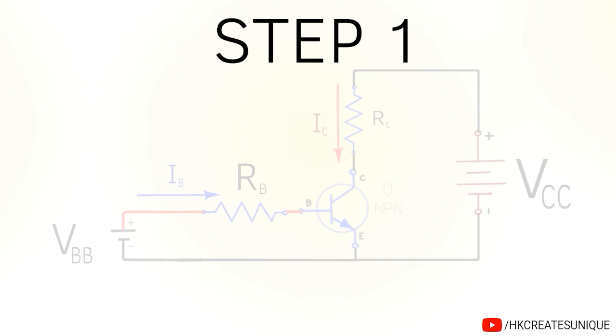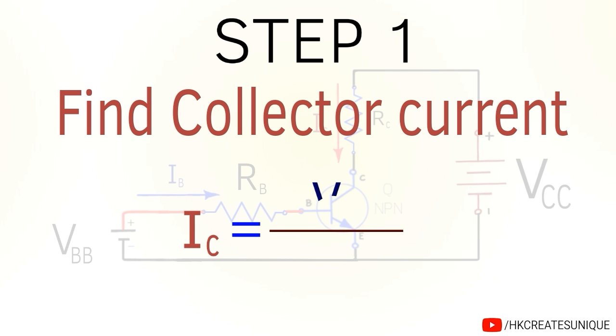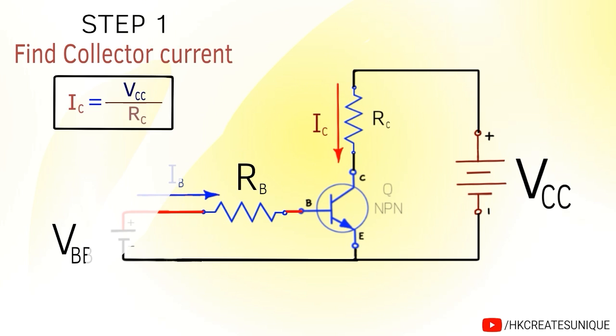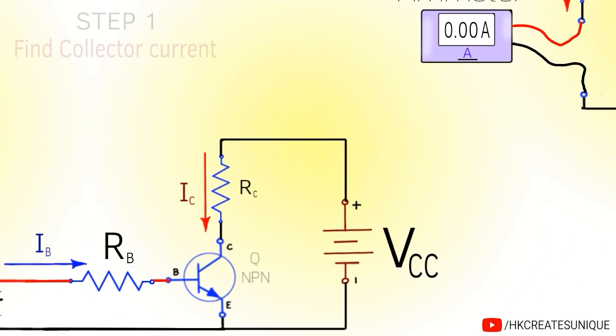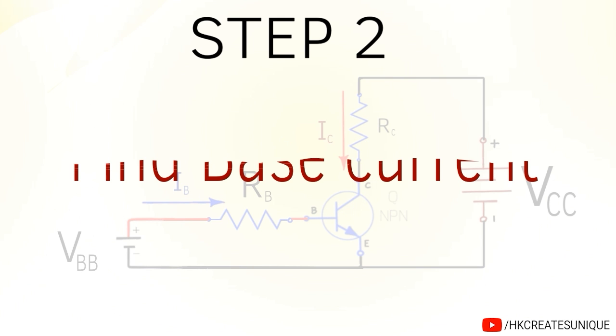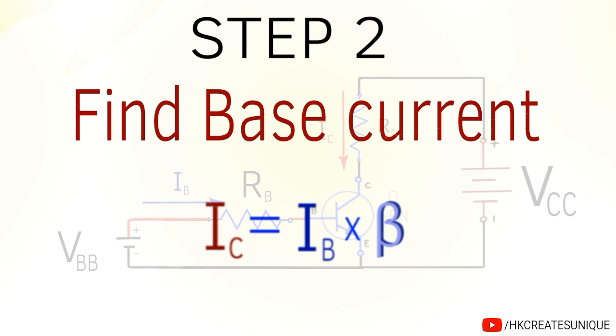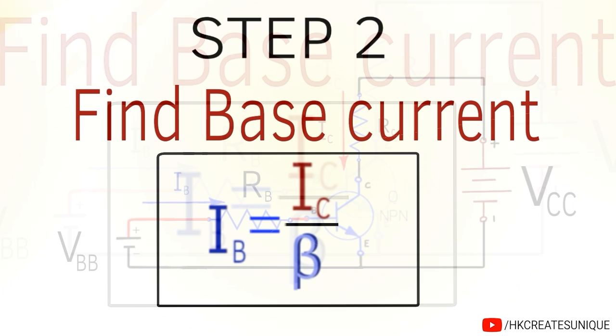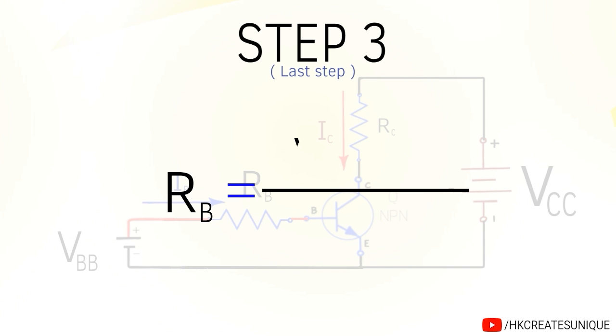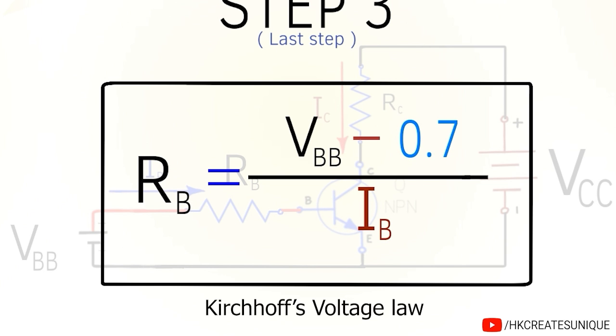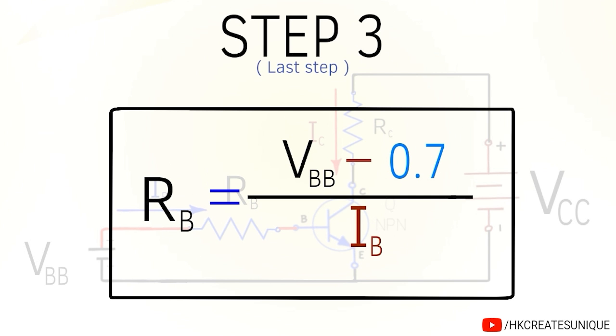Step 1 is to find the collector current. By using Ohm's law, IC is equal to VCC divided by RC. You can also use an ammeter to find the collector current like this. Step 2 is to find the base current. Use this equation which we discussed earlier. Rearrange the equation to find the base current like this. So IB is equal to IC divided by the current gain beta. Finally, the last step is to find the base resistance. RB is equal to VBB minus 0.7 divided by IB. This equation can be derived using Kirchhoff's voltage law. So by following these three steps, you can calculate the value of base resistance RB in the circuit.